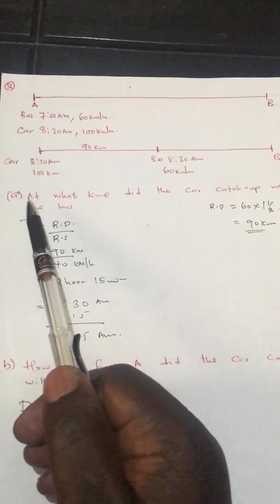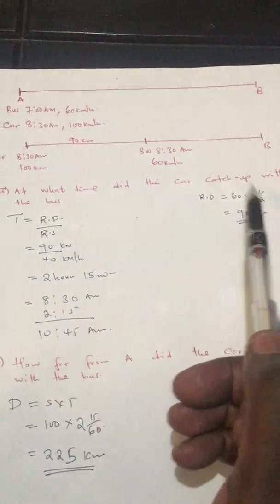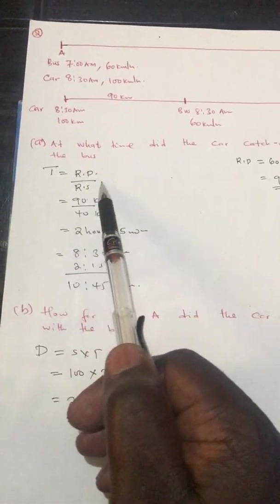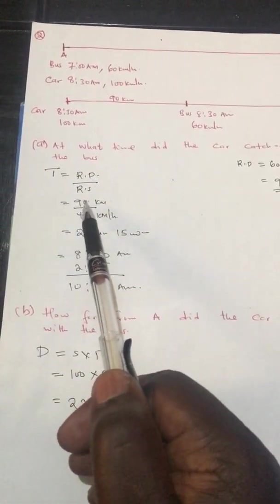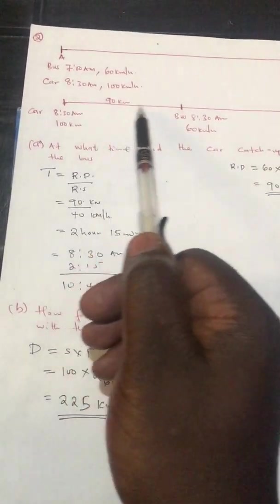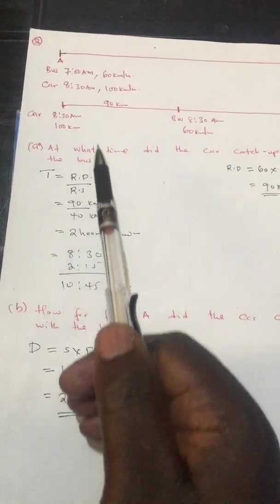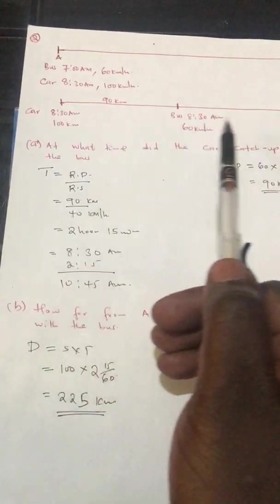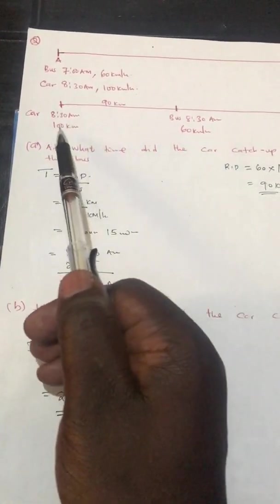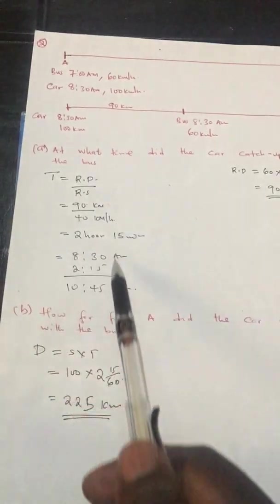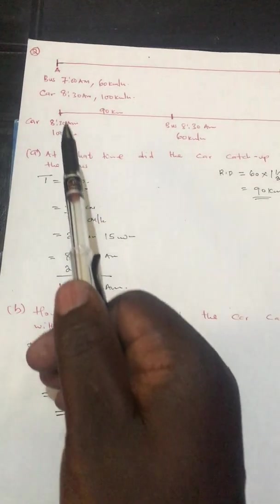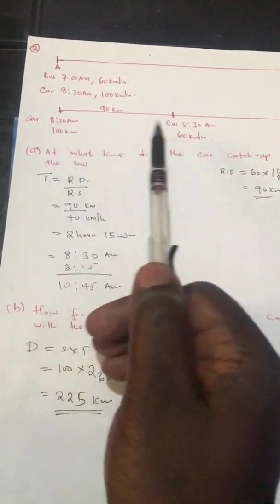Question: at what time did the car catch up with the bus? Time equals relative distance over relative speed: 90 divided by (100 minus 60), which is 90 divided by 40. When bodies move in the same direction, subtract their speeds to get relative speed. This gives 2 hours 15 minutes.